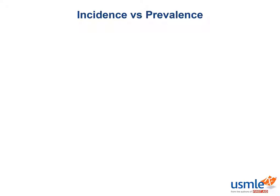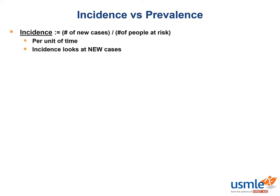Let's discuss the differences between incidence and prevalence. The incidence of a disease is defined as the number of new cases in a population over a given period of time, divided by the total population at risk during that time. Incidence describes new cases that occur in a time period. When calculating incidence, people who are not at risk for acquiring the disease are omitted.